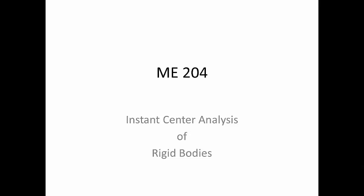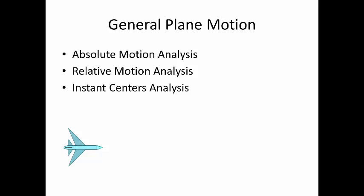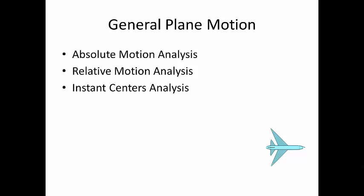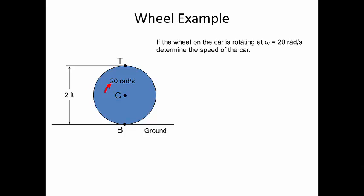ME204: Instant Center Analysis of Rigid Bodies. To solve general plane motion problems with both rotation and translation, we've looked at absolute motion analysis and relative motion analysis. Now let's look at instant centers analysis. Using the wheel example from relative motion analysis: if the wheel on the car is rotating at 20 radians per second, let's determine the speed of the car.